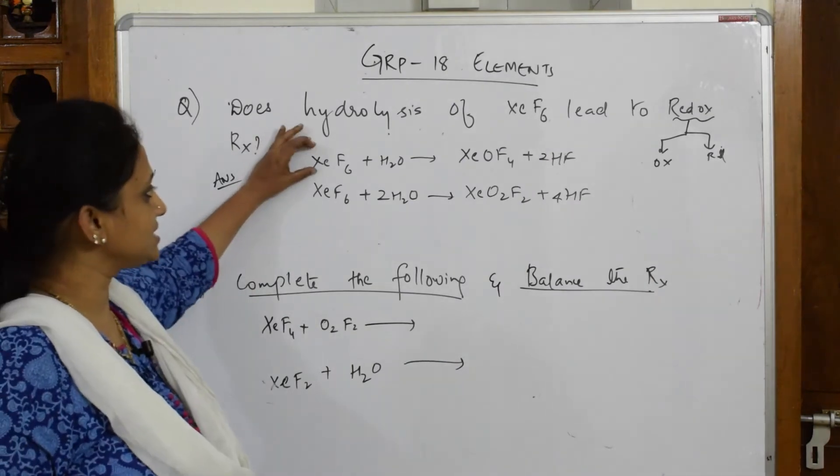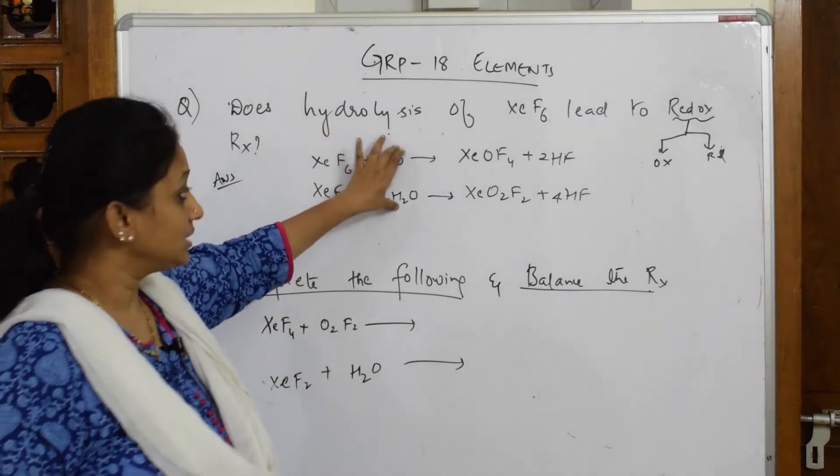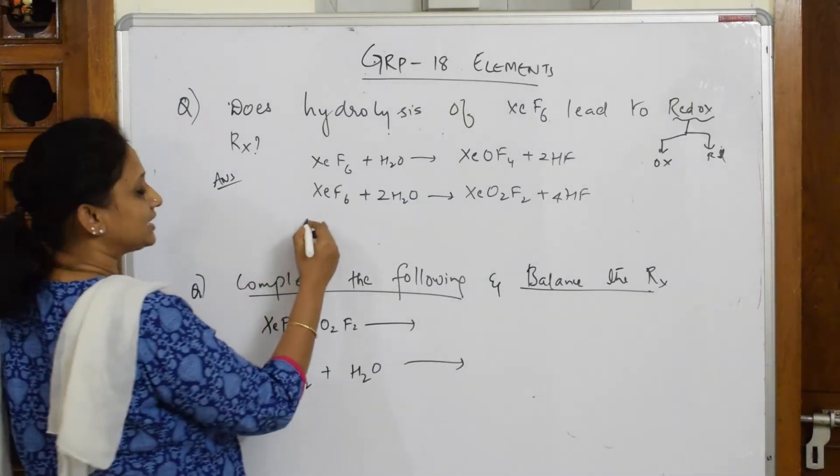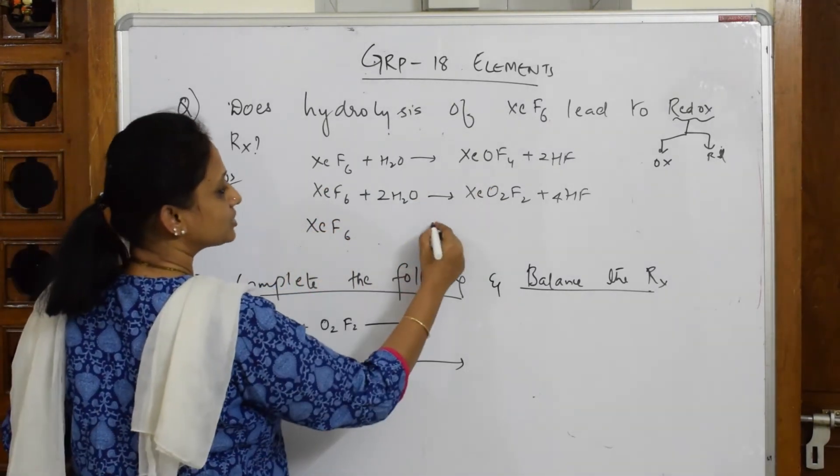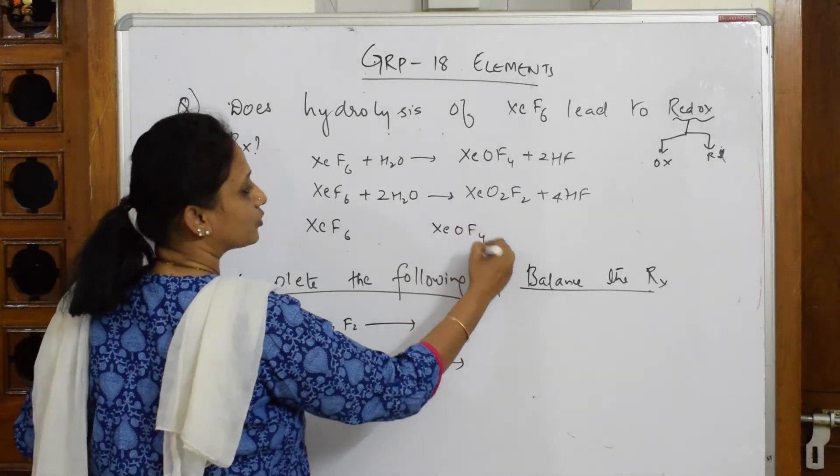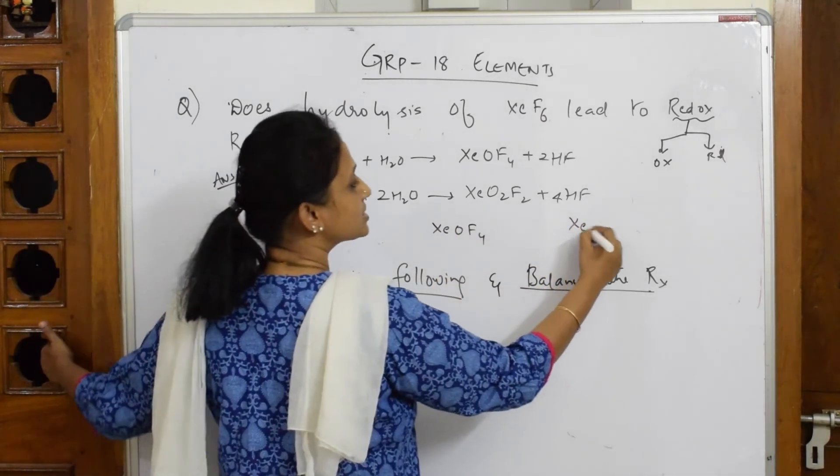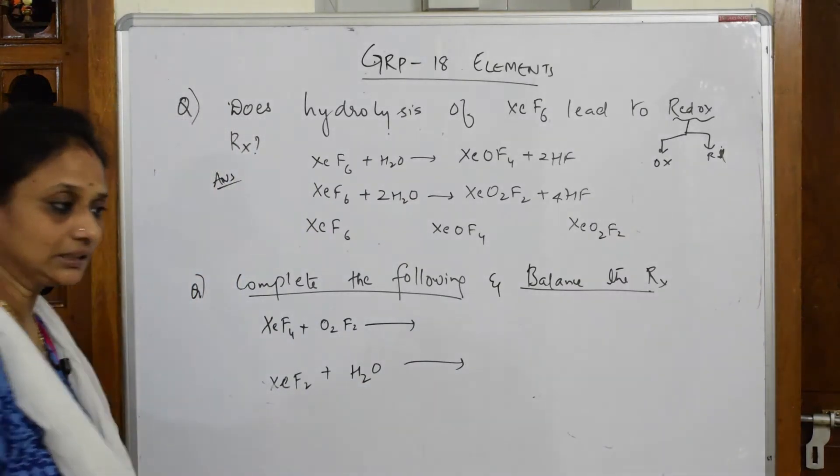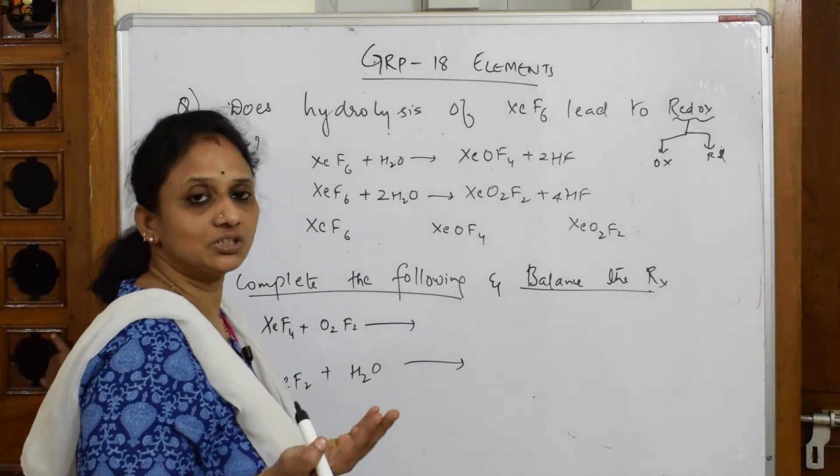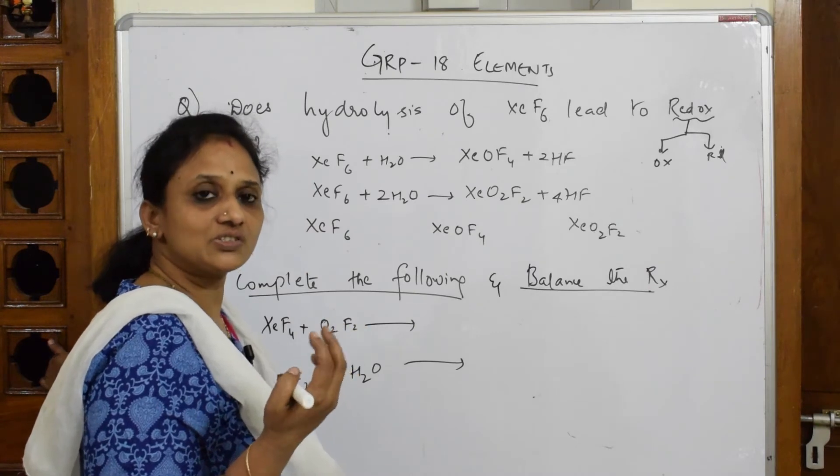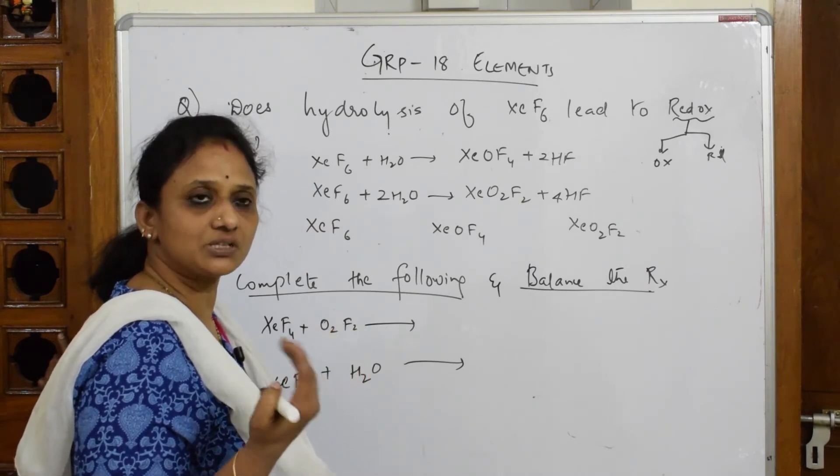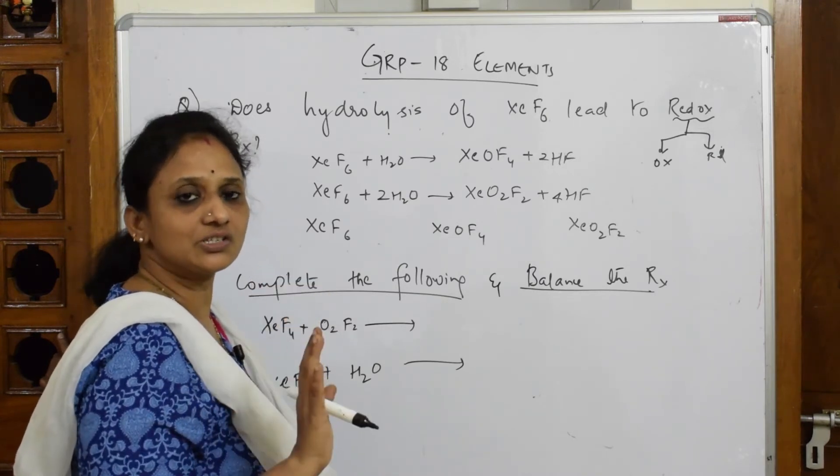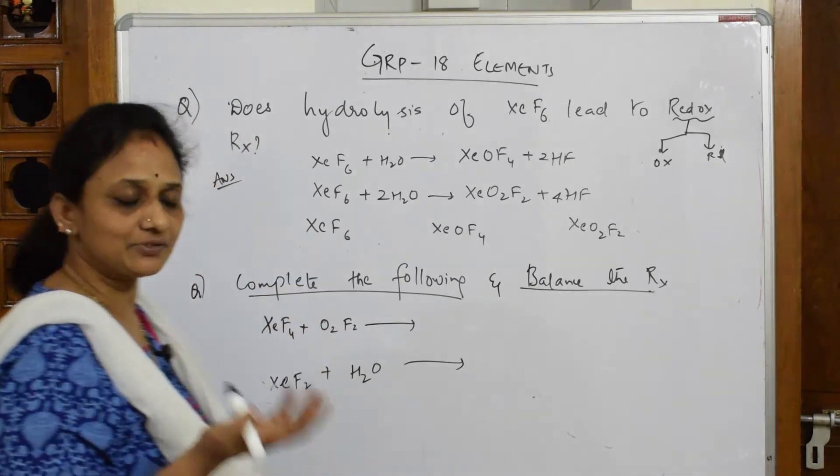Now they're asking, in this XeF6 hydrolysis, is it a redox reaction? So let us compare. I'm picking up this product XeOF4 and this product XeO2F2. Now let us calculate xenon oxidation state. If there is increase or decrease, then I'll say it's redox. Increase in oxidation number is oxidation, decrease in oxidation state is reduction.